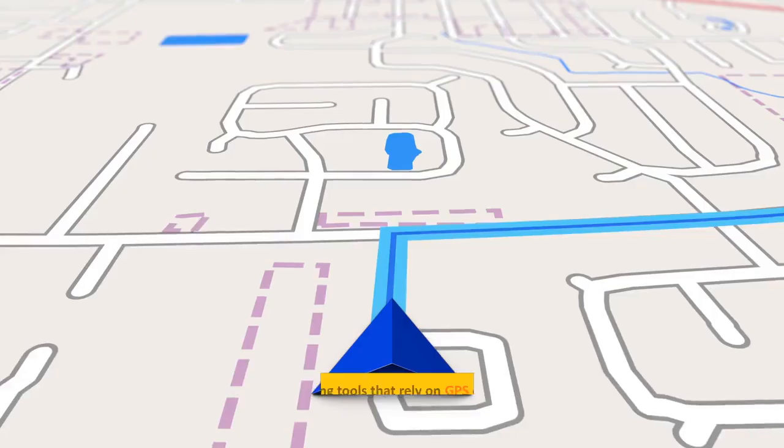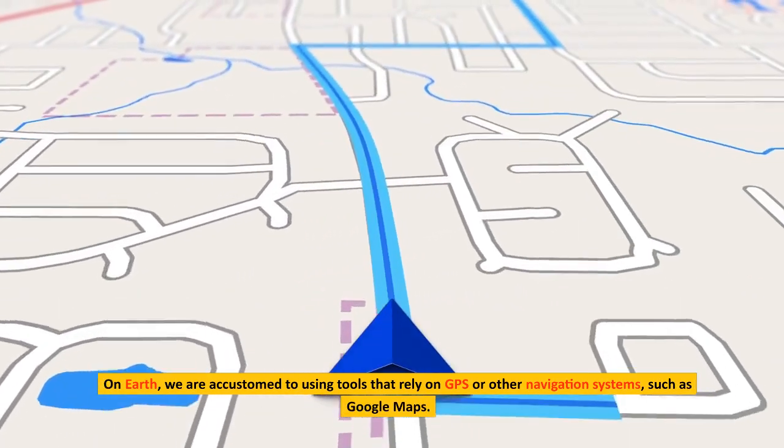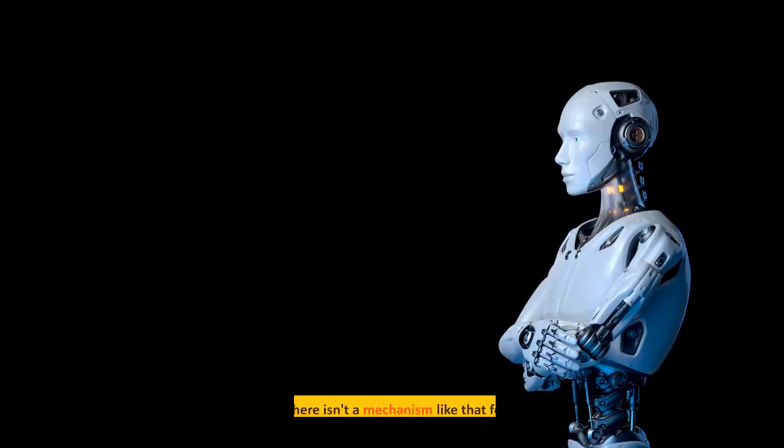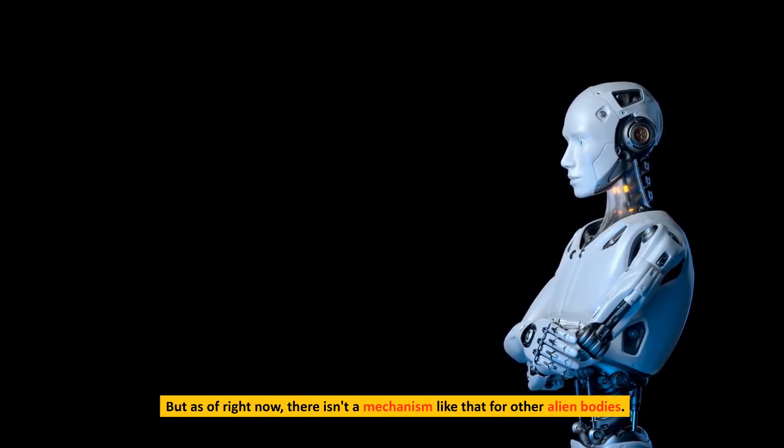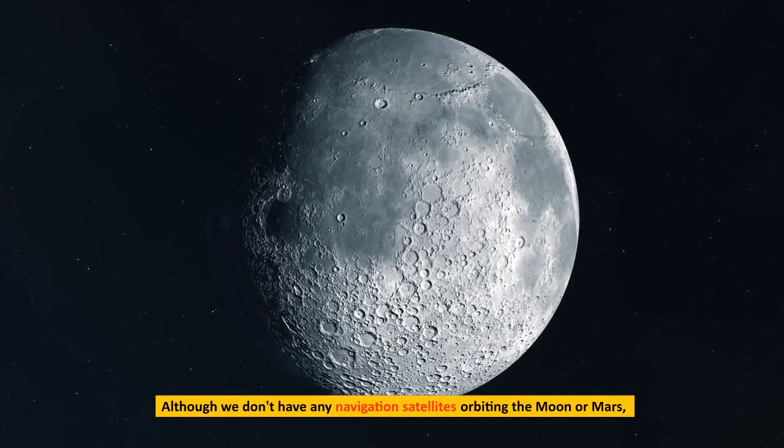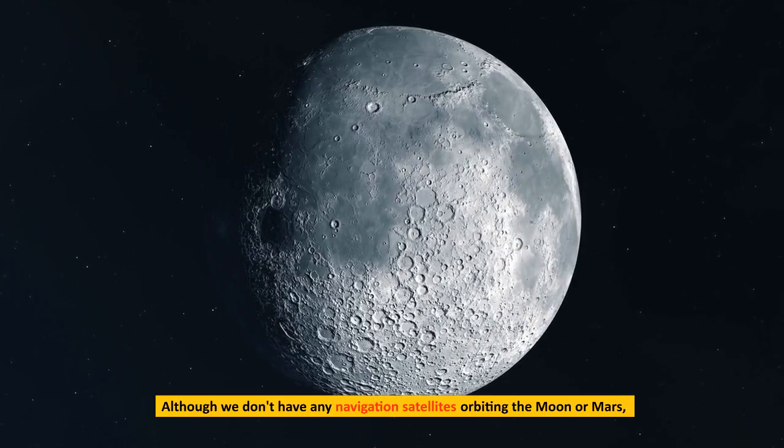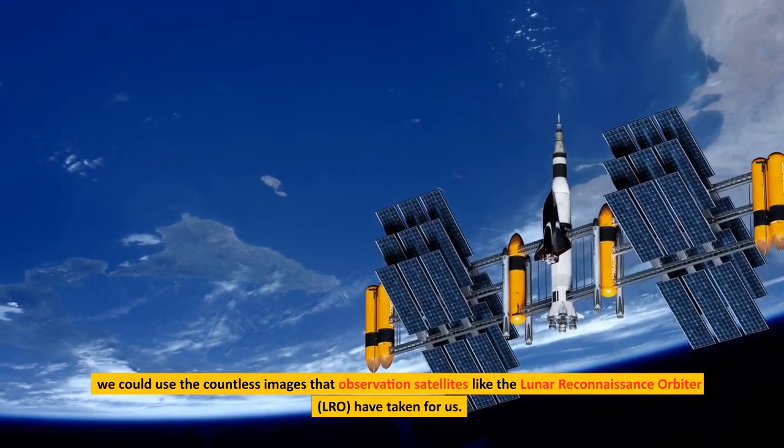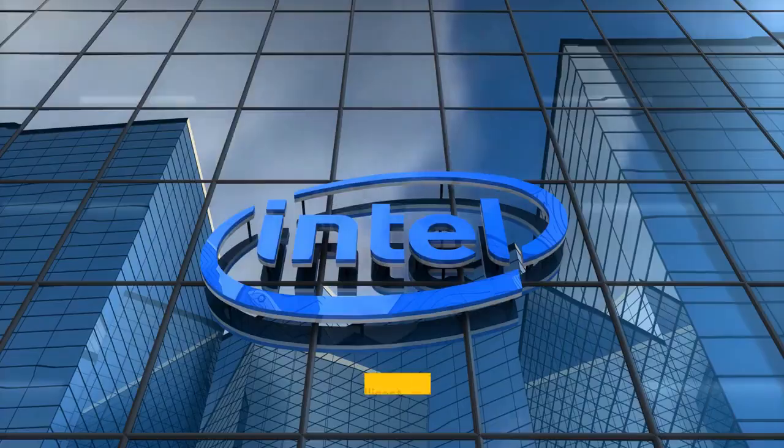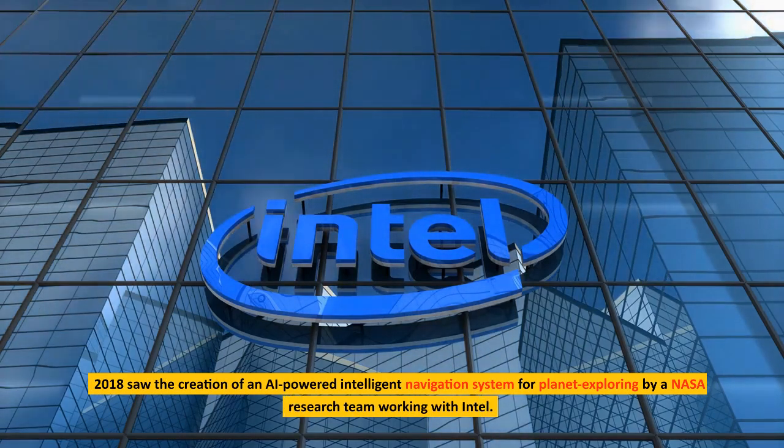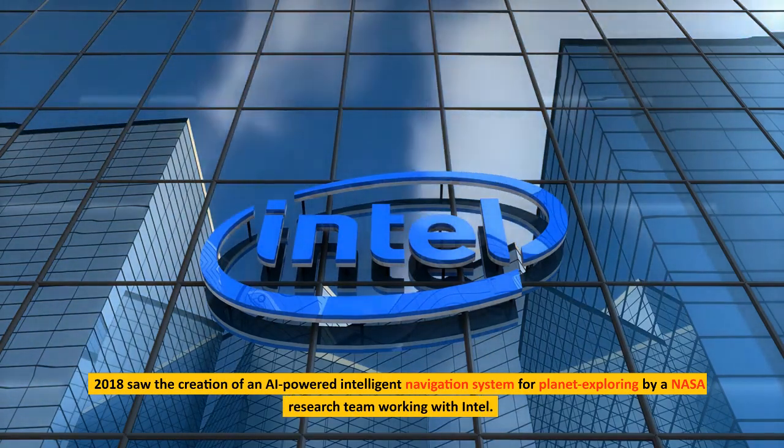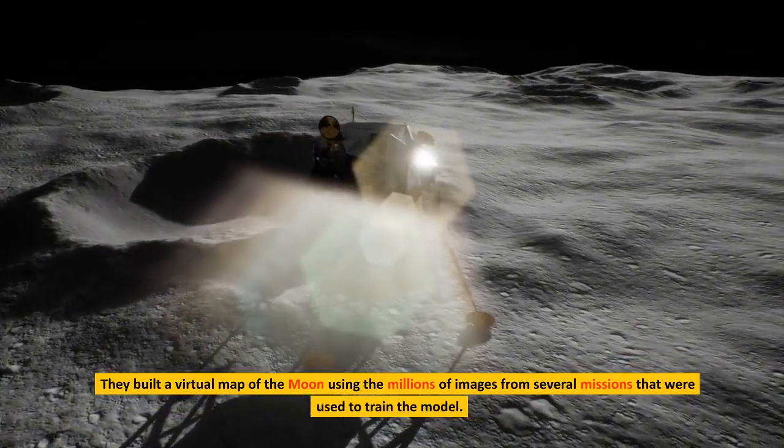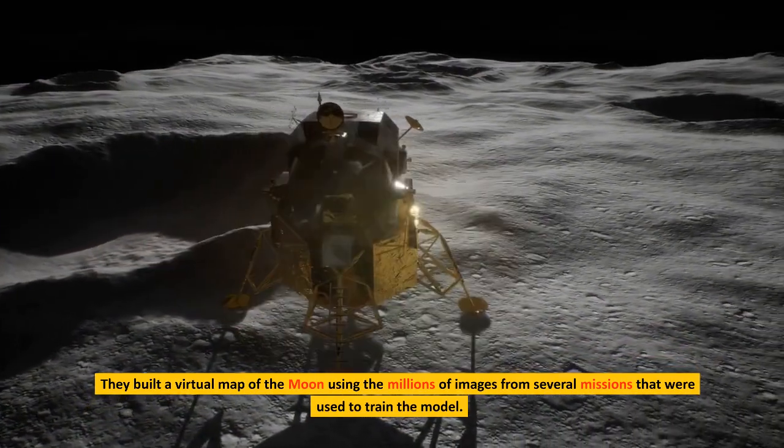Navigation devices. On Earth, we are accustomed to using tools that rely on GPS or other navigation systems, such as Google Maps. But as of right now, there isn't a mechanism like that for other alien bodies. Although we don't have any navigation satellites orbiting the Moon or Mars, we could use the countless images that observation satellites like the Lunar Reconnaissance Orbiter have taken for us. 2018 saw the creation of an AI-powered intelligent navigation system for planet exploring by a NASA research team working with Intel. They built a virtual map of the Moon using the millions of images from several missions that were used to train the model.